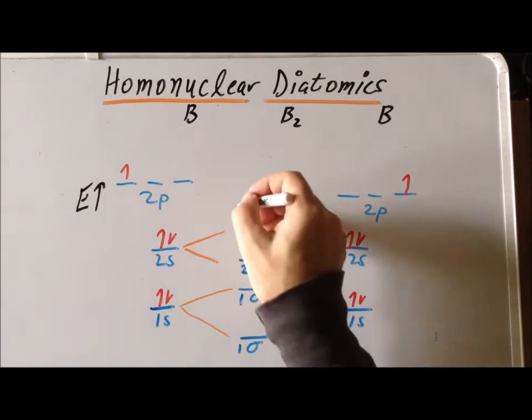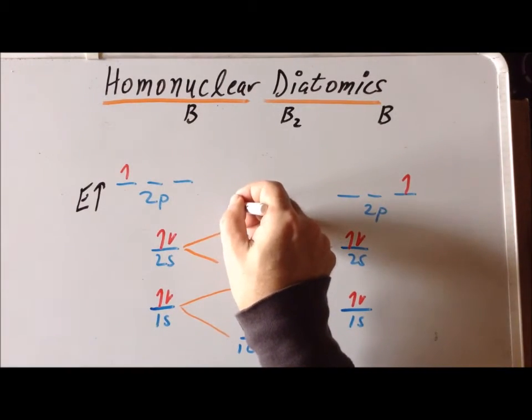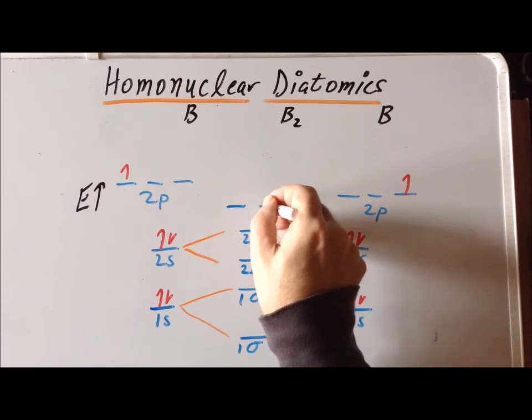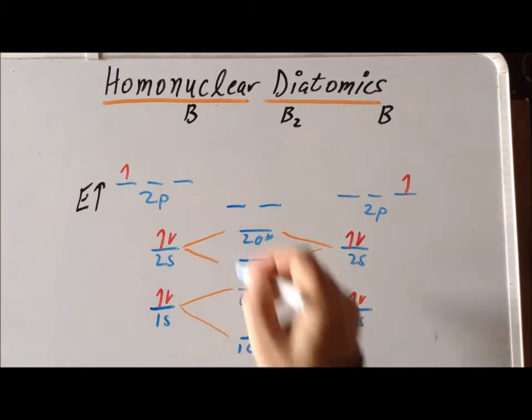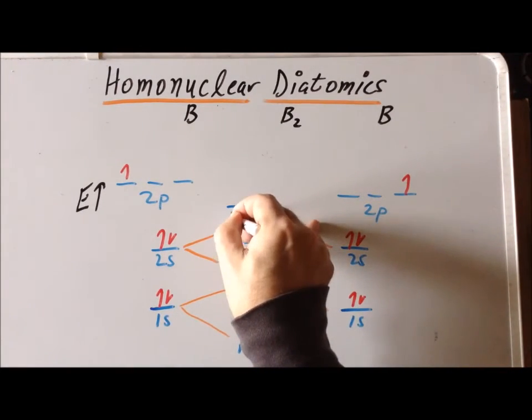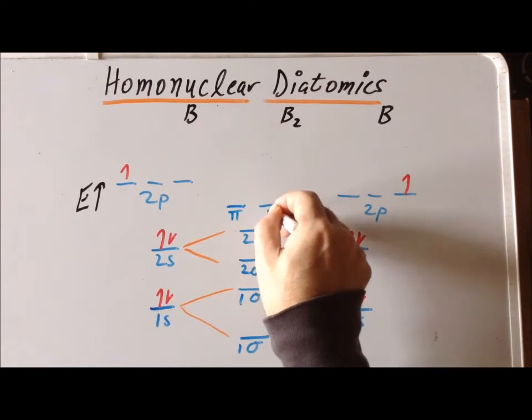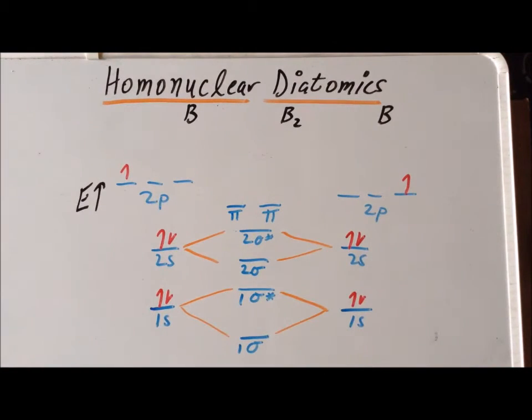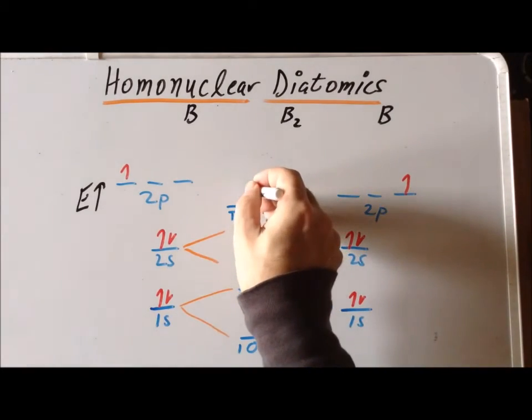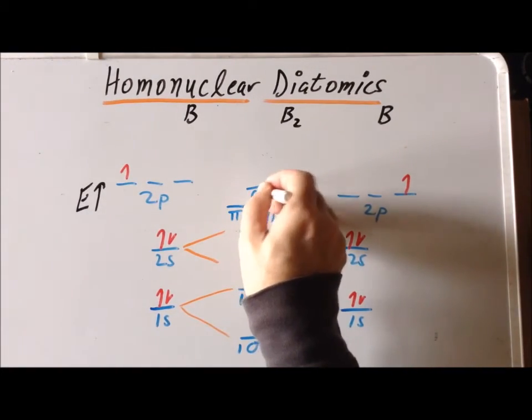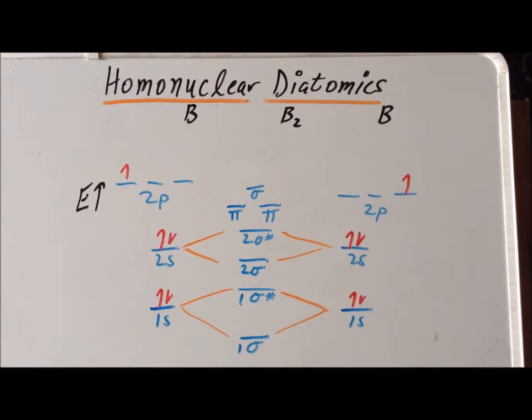For B2, the lowest energy bonding combination will actually have pi symmetry. So we have two doubly degenerate pi bonding orbitals, which are followed by a sigma bonding orbital. These are lower in energy than the 2p orbitals.